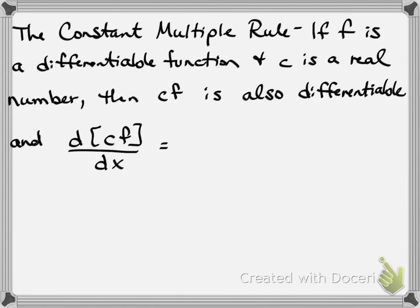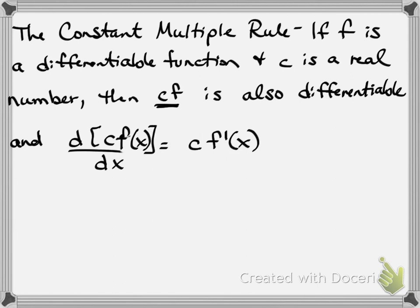The next rule — the last one today — is the constant multiple rule. If f is a differentiable function and c is a real number, then c times f is also differentiable. The derivative of c times f(x) with respect to x is just c times the derivative of f(x). Remember how we could bring constants to the front with a limit? We can do that now too.